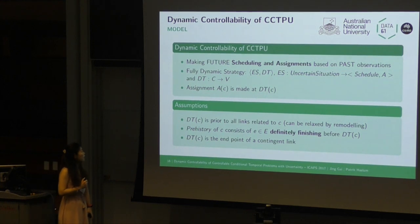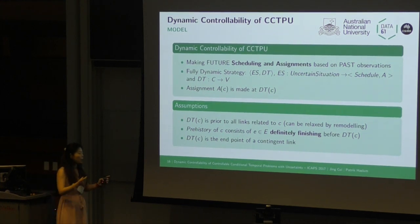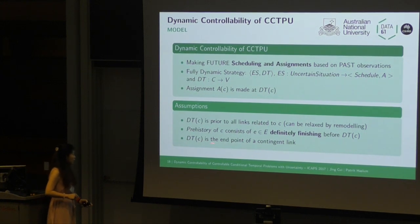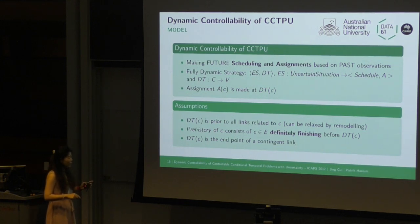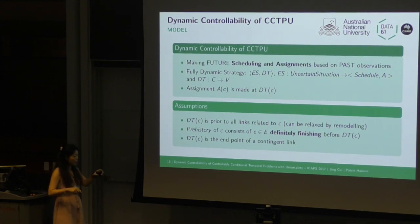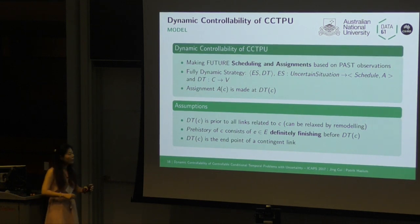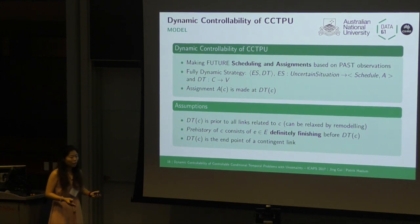The first assumption is that the decision time point must be before all links related to that discrete variable, though this can be relaxed by remodeling. The second assumption is that the prehistory of discrete variable C consists of edges definitely finished before its decision time point — a conservative assumption, but it gives us a settled set of prehistory. The third assumption is that the decision time point is the end of a contingent link, because we split the strategy after observation.